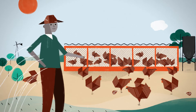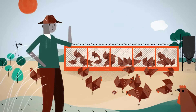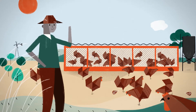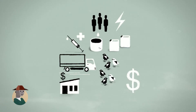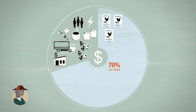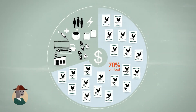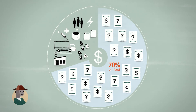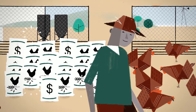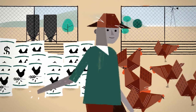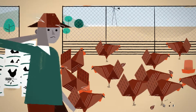Meet Henry, a poultry farmer who loves his job but wants to increase his profit. Like most farmers, Henry spends 70% of his total farm expenses on feed — that is often highly expensive and of uncertain quality. So, how could Henry lower his expenses and yet increase his feed quality?